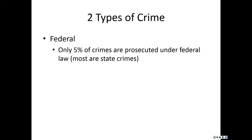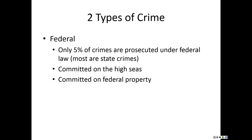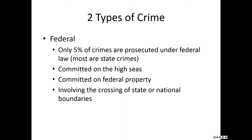That doesn't mean there are no federal crimes. Federal crimes include committing a crime on the high seas, on federal property — post offices, federal buildings, military bases, federal parks — or crimes involving crossing state or national boundaries. For example, if you take someone across a state line without their consent, you've committed kidnapping, and because you crossed the state line, it becomes a federal crime.